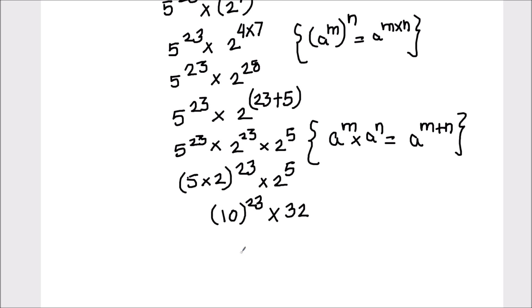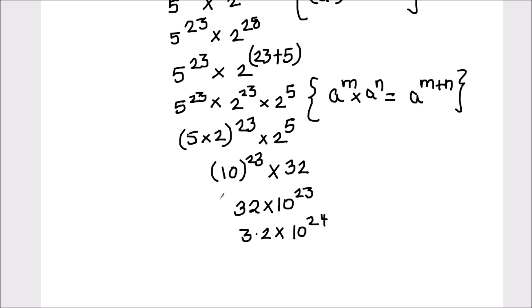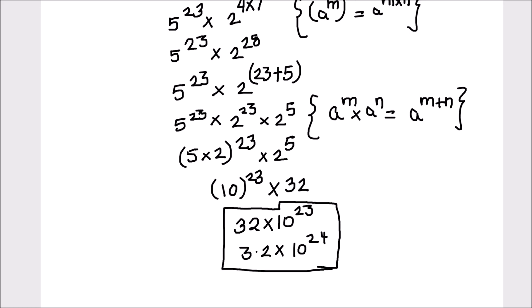So we can write it as 32 times 10 raised to power 23, or we can write it as 3.2 times 10 raised to power 24. This is our final answer — this is how we solve these kinds of problems.